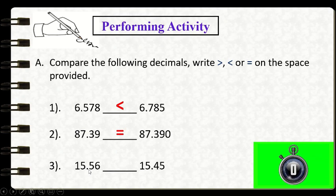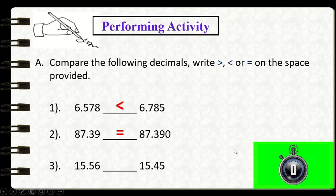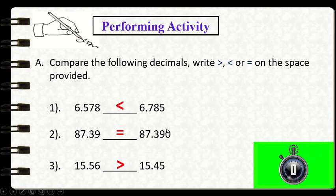In the tenths place, the digit is 5 for the first number and 4 for the second number. Since 5 is greater than 4, therefore we can say that 15 and 56 hundredths is greater than 15 and 45 hundredths. The open side of the symbol faces the bigger number and the pointed part faces the smaller number.